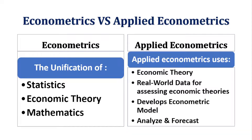This is what applied econometrics is. Econometrics is the unification of statistics, economic theory, and mathematics, whereas applied econometrics deals with real world data, develops econometric models, and presents analysis and forecast. After understanding the difference between econometrics and applied econometrics, the next thing we require is where to study them. Books are the best friend for a researcher, but what are those books which we may use for such kind of study?